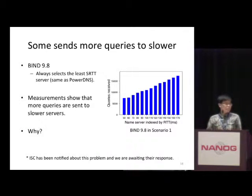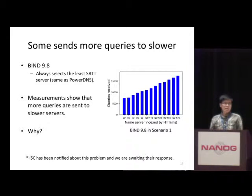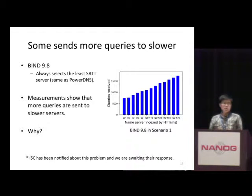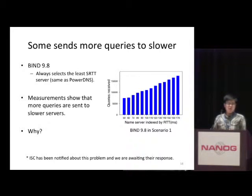The most surprising result we found is the query distribution of BIND 9.8. BIND 9.8 sends most queries to the slowest name server. However, when we looked at the implementation of BIND 9.8, we found that it actually adopts the most traditional server selection algorithm — selecting the name server with the least estimated round-trip time and using SRTT decaying to query those unselected name servers periodically. However, our measurement results suggest that this algorithm does not take effect, so we tried to understand why.